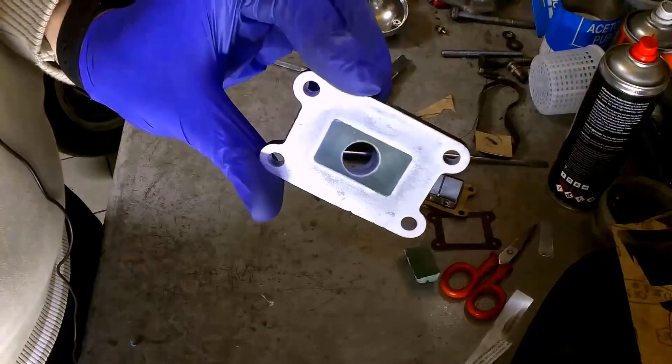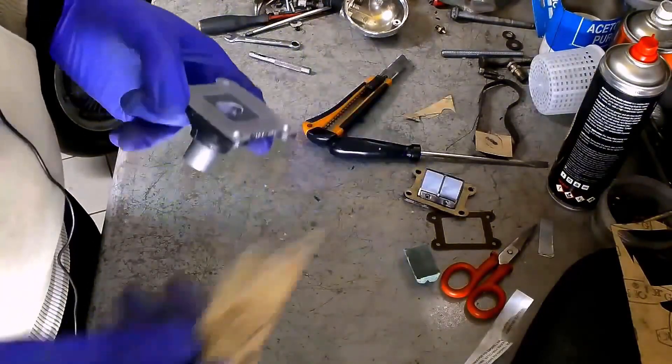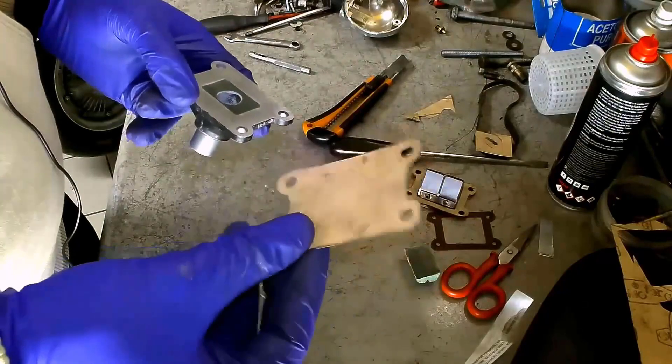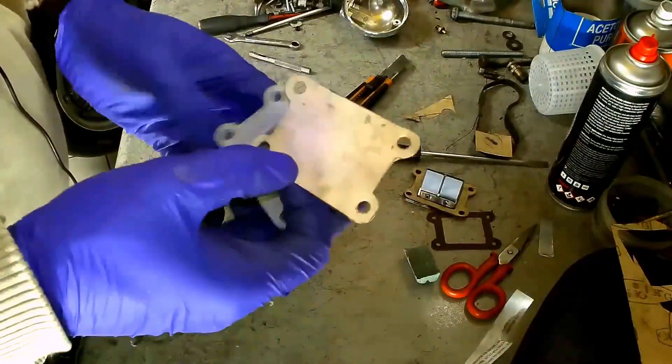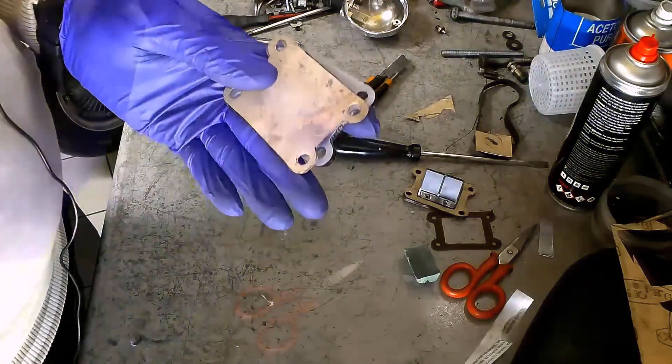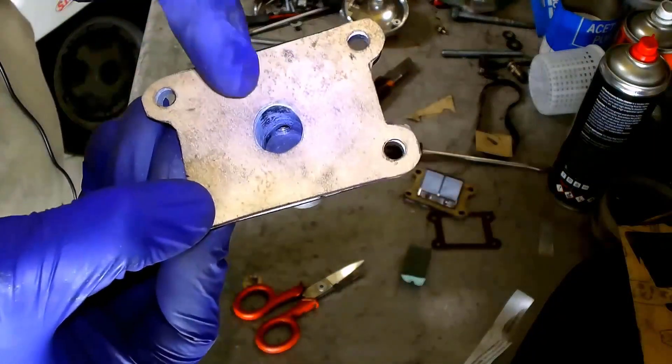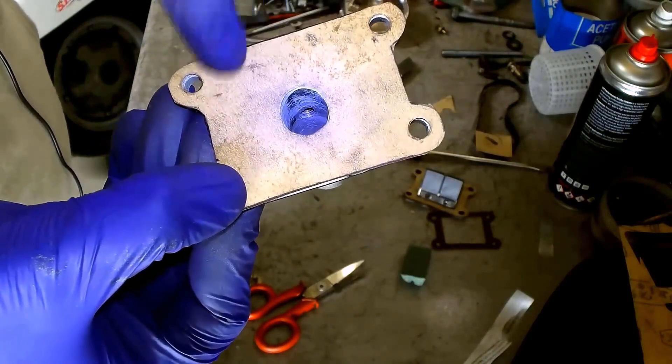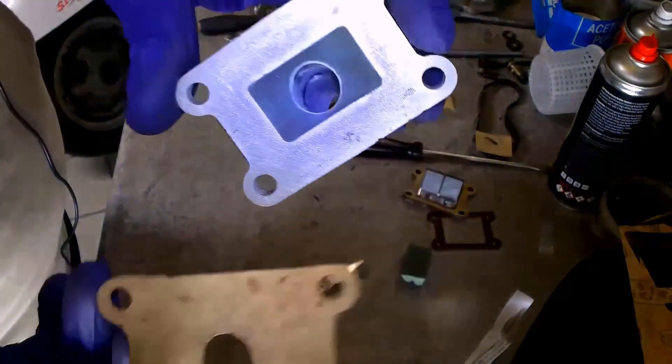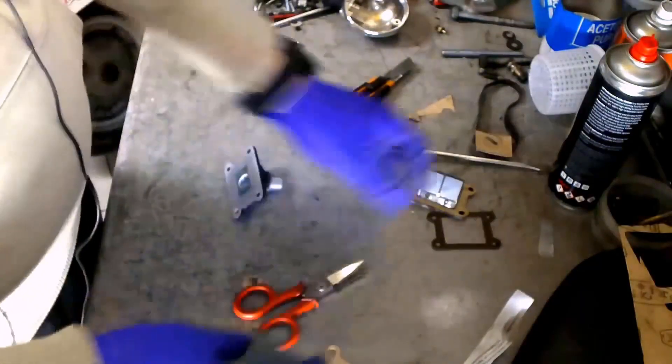The manifold is ready. In the meantime, I proceeded to make this gasket in order to make a template, with which to dig the flow guide of the reed valve pack. Once we've made the hole on the gasket that perfectly copies the one of the manifold, let's go and make the drawing on the flow guide.